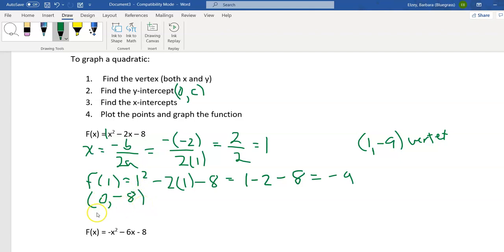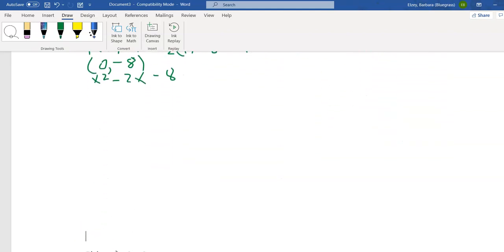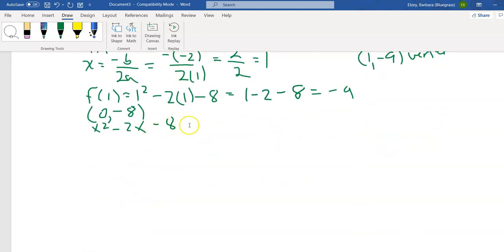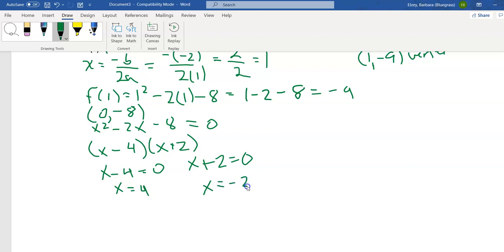X-intercepts though are a little harder. Remember we've got to take the whole thing and set it to 0 and solve. So let's set this to 0. This factors nicely, factors of negative 8 that add to give us negative 2, or x minus 4 and x plus 2. Set those to 0. And this one gives me 4 and this one gives me negative 2. Let's write these as their points. X-intercepts of 4, 0 and negative 2, 0.